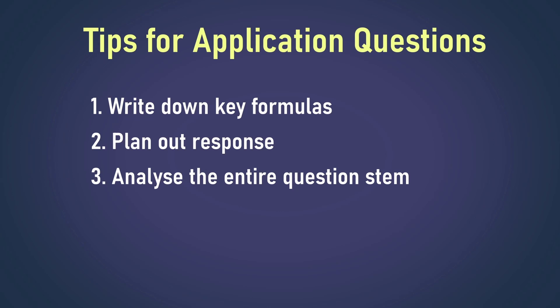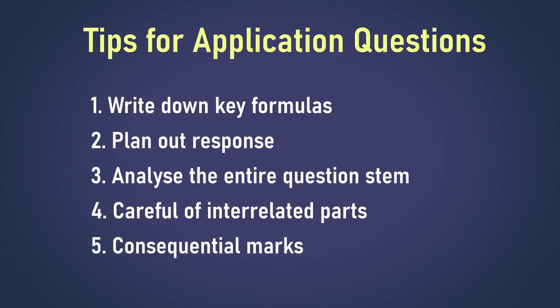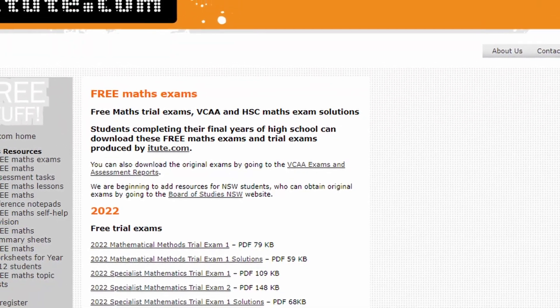For example, if the question says 'rate' or 'maximum point,' it might be talking about derivatives. Also, look at the entire question — don't just look at part C, look at parts A and B, since each part is often interrelated and can give you insights about how to answer the following parts. If you don't know how to do part A, you can make up an answer and use it in part B — in most cases you'll get consequential marks. After finishing these questions, it's time to review them. For official VCAA questions, you can look at the examiner's report or on websites such as itute.com.